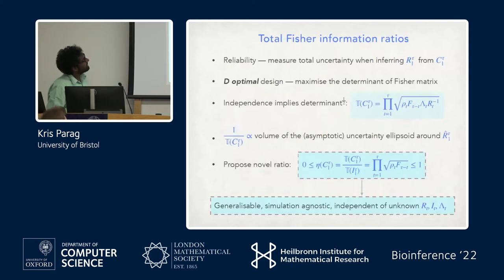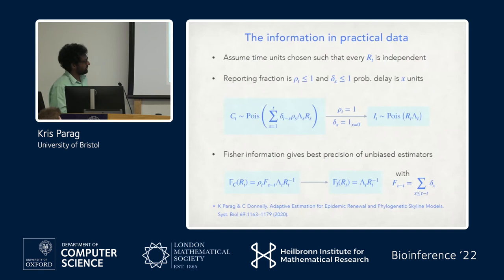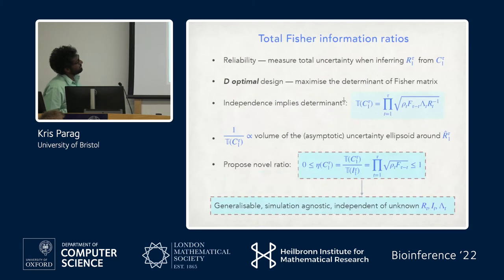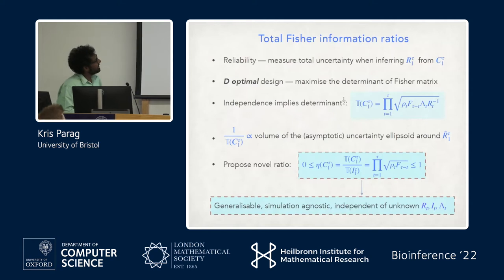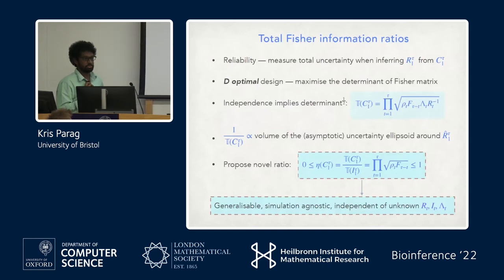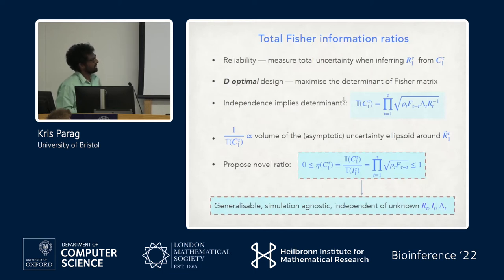We use Fisher information specifically to think about the asymptotic or best precision of an unbiased estimator of R. Say we have a sequence of R's from 1 to tau that we want to infer from the case time series. Optimal design theory suggests focusing on the determinant of a Fisher information matrix. Given the independence assumption, we can write that down — I gave the square root of this — and we call it the total information in the case time series.